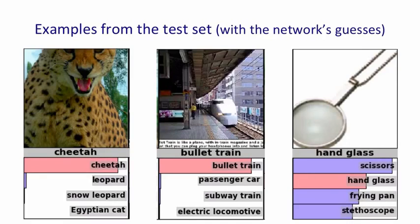The last image shows a different kind of example where there's no background clutter — the object is quite well isolated, probably a picture from a catalogue. The network doesn't get it right for its first bet, but does get it in its top five. The network isn't confident about anything here. It correctly realises it doesn't really know, and if you squint so you can't see the image too well, you can see how it might think it was a frying pan or a stethoscope.